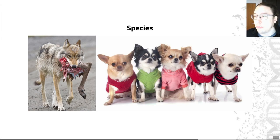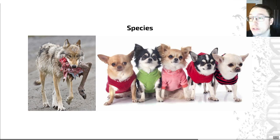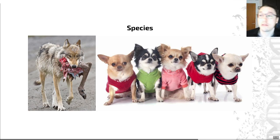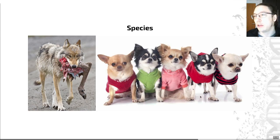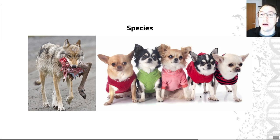This happened, for example — and this is not a natural speciation, but nevertheless — when wolves were domesticated. Humans selectively bred wolves, and ultimately that resulted in chihuahuas. These two can no longer interbreed. Using the biological species concept, we would say that those are different species. Whether it's a good idea to think of them as different species, given that humans are responsible for chihuahuas, is an interesting discussion point.